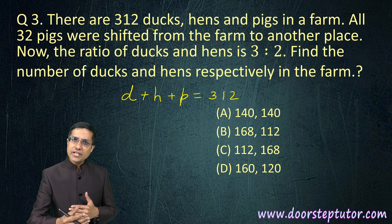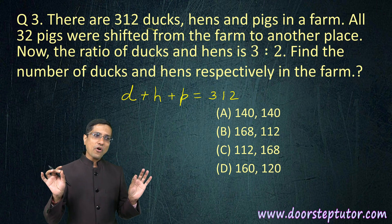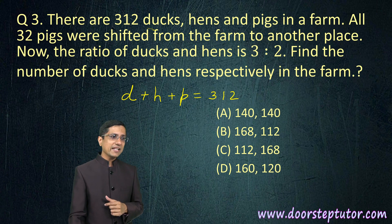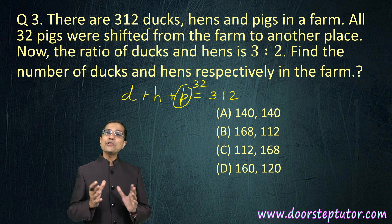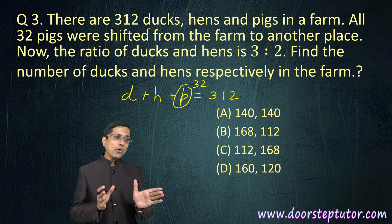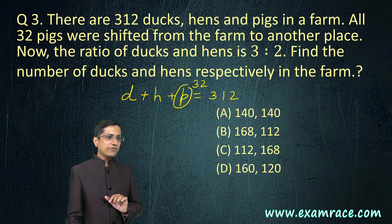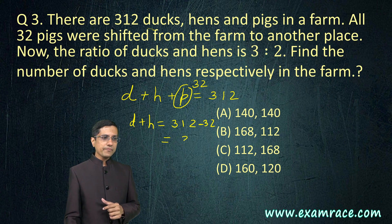The approach is to read word problems very systematically. All 32 pigs were shifted from the farm to another place. Now we have been told indirectly the number of pigs. This is the key, this is the trick here - it is given indirectly. So there were 32 pigs which have been shifted to another place.